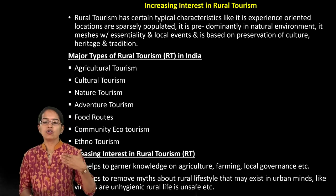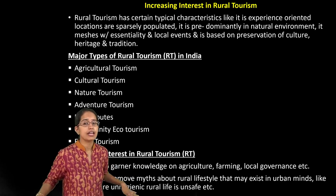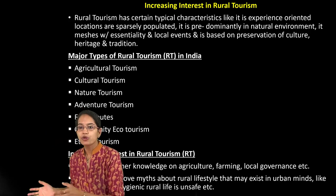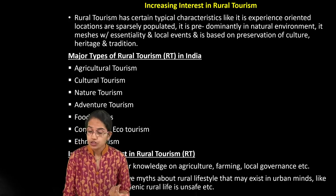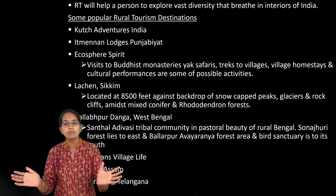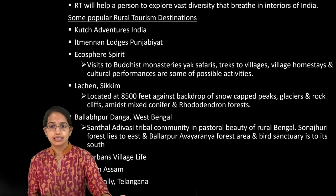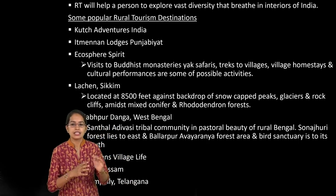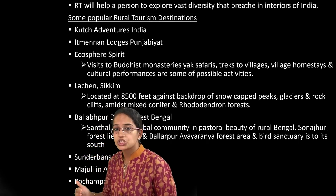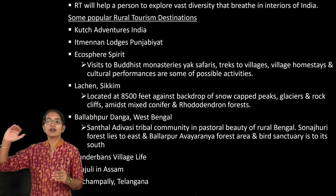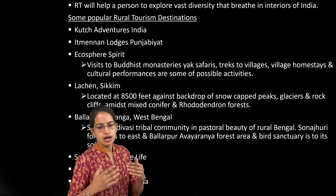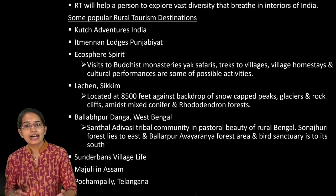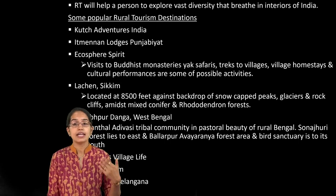To increase interest in rural tourism, we can diversify it under various heads — agriculture, nature, adventure trails, forest conservation, food routes, and ethnotourism — and advertise based on individual interests. Popular examples of rural tourism include the Kutch Adventures and Kutch festival, Tikam Lodge in Punjab, Lachung in Sikkim near the Rhododendron forest, Ballavpur Dhang in West Bengal known for pastoral beauty and a bird sanctuary, Majuli Islands in Assam, Sundarbans village, and Pochampalli in Telangana.